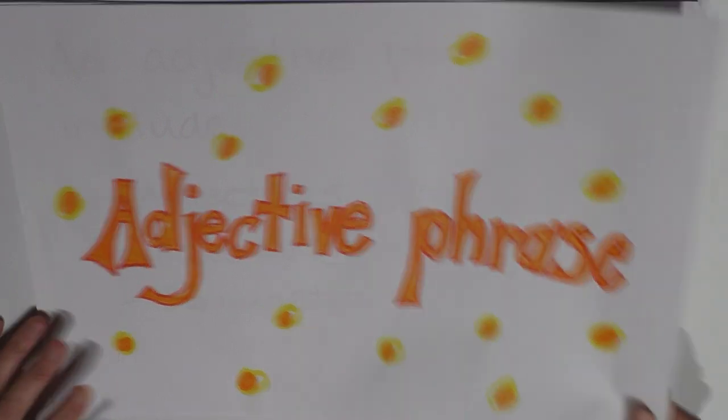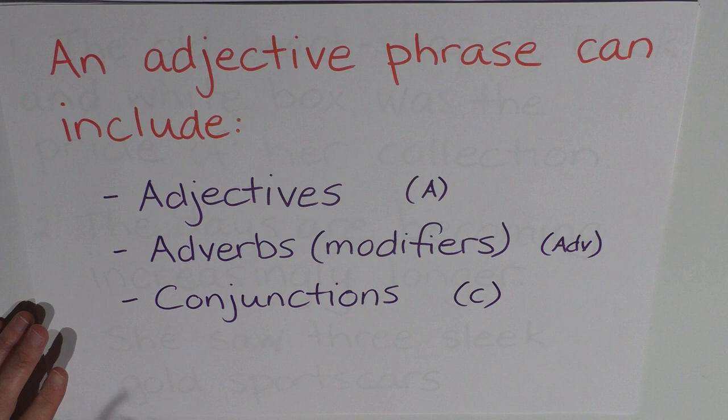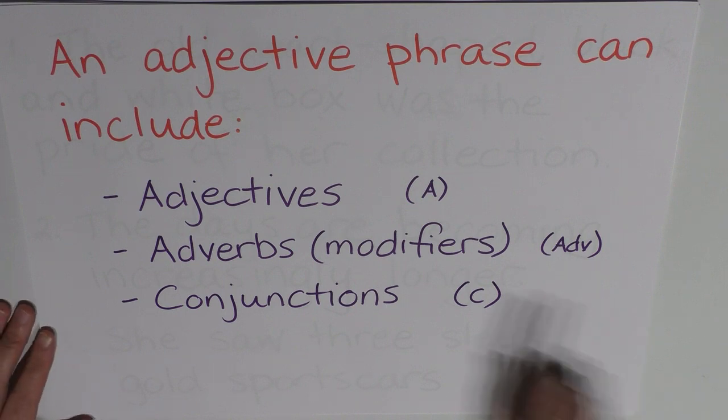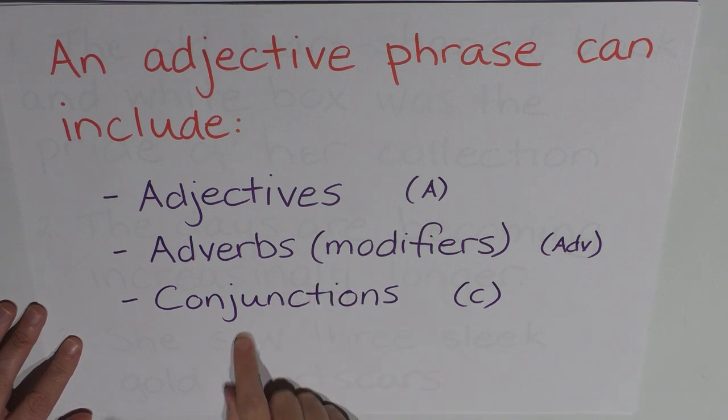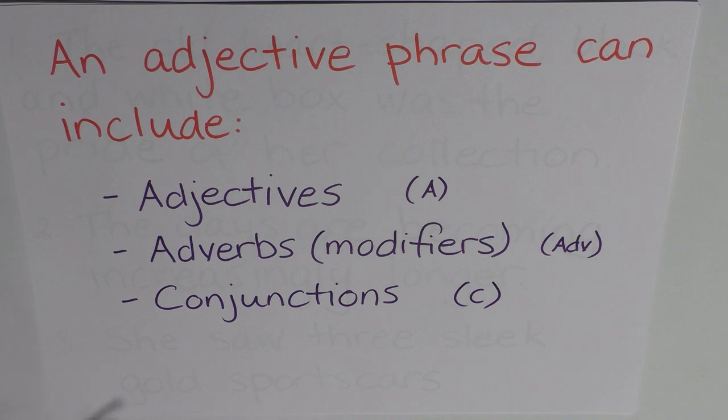An adjective phrase can include adjectives, adverbs or they're called modifiers because they're modifying the adjective, and conjunctions, and these all work together grammatically pointing to the adjective and the adjective phrase describes the noun.